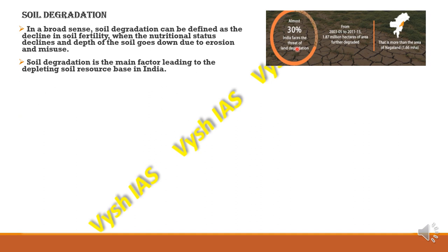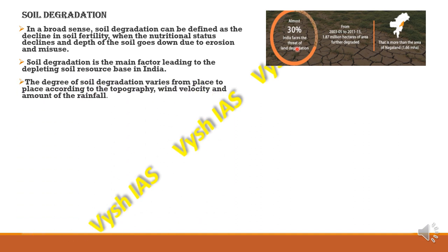Soil degradation is the main factor leading to the depletion of the soil resource base in India. The degree of degradation varies from place to place according to topography, wind velocity, and amount of rainfall. On steep slopes, landslides occur and soil washes away. In deserts and dry areas, high-speed winds carry the top layer of soil away. Heavy rainfall can form gullies or pits in soil due to the force of water droplets.